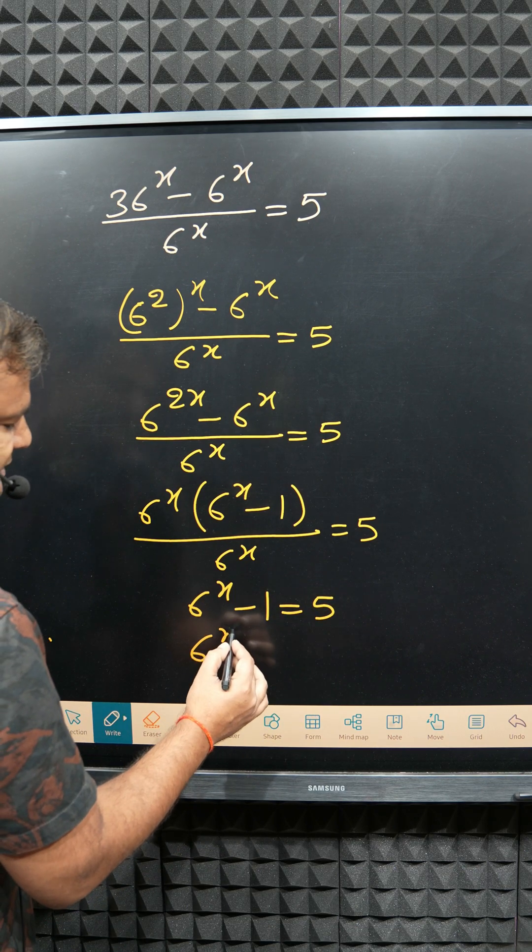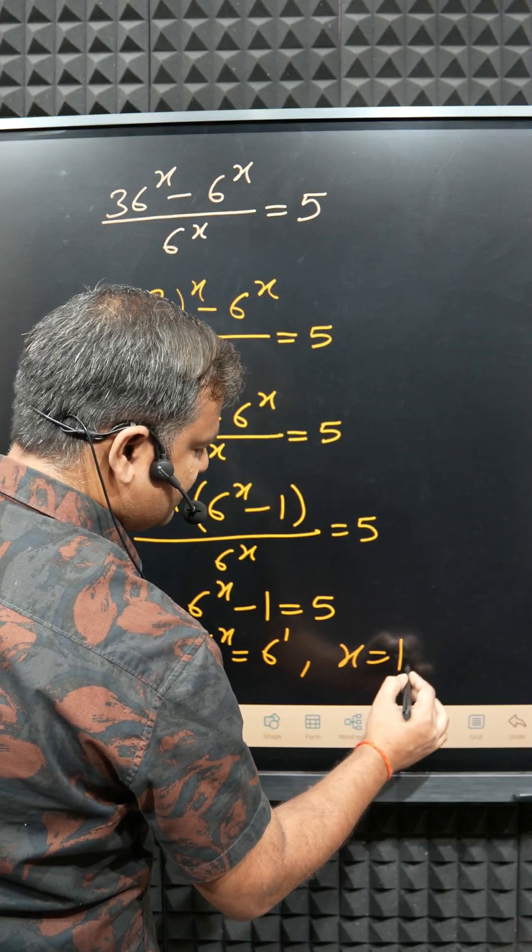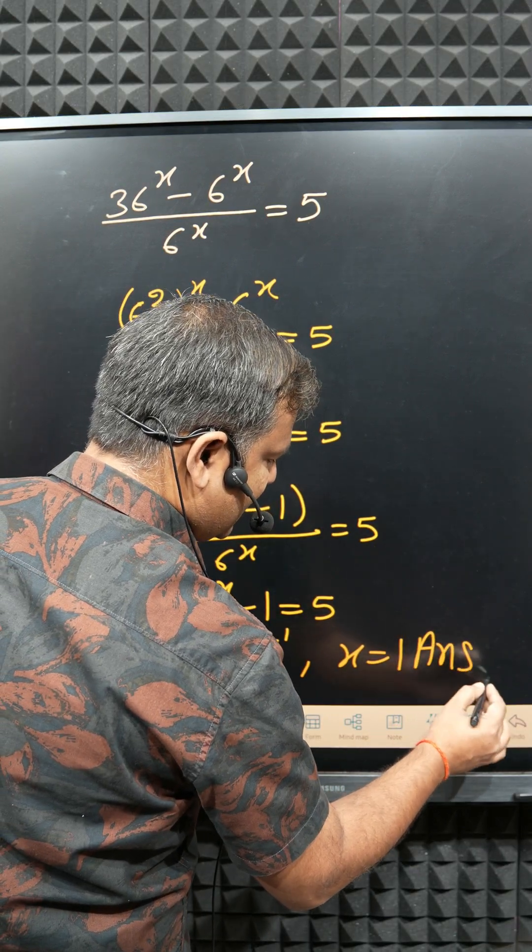So 6 to the power x equals 6 to the power 1. So you can say that x equals 1 is the right answer.